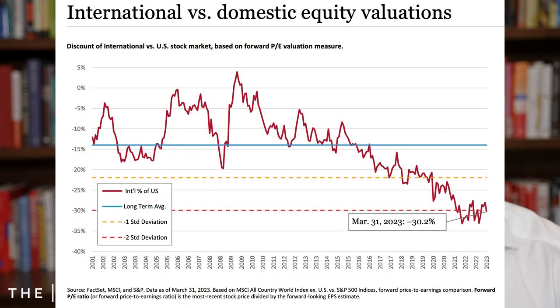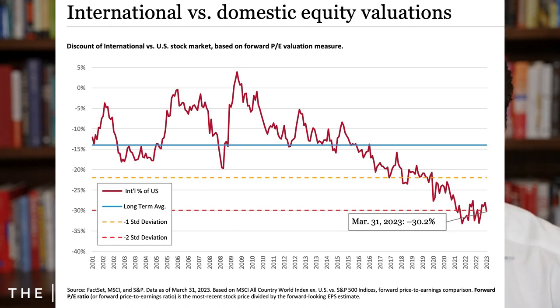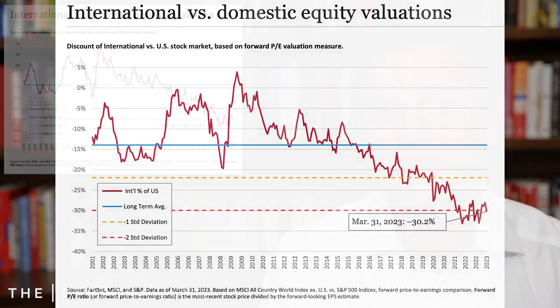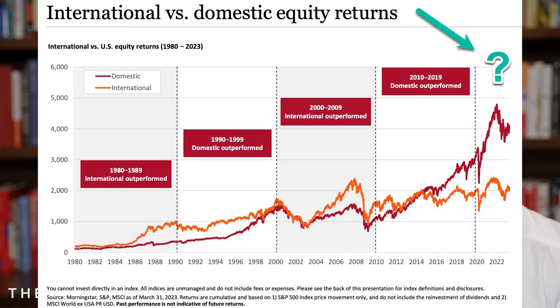Why might it go back and forth? Well, when you have one asset class that does really well and the other that doesn't, the outperformer becomes more expensive relative to the other. Switching charts — this here shows how international is valued relative to U.S. markets. As you can see, it's going down and down, which means international is pretty inexpensive relative to U.S. markets. So if we look at the next 10 years, we don't know what will outperform, but we can ask whose turn it is and which asset class — U.S. or international — is less expensive.